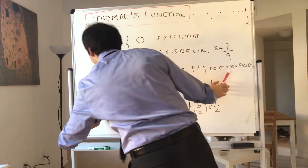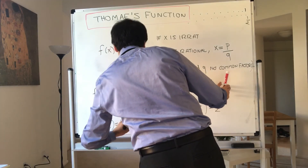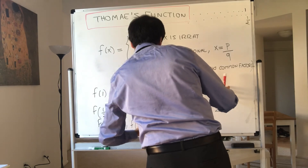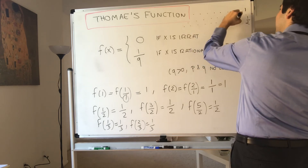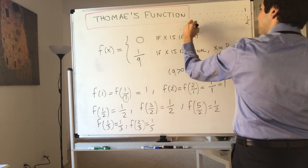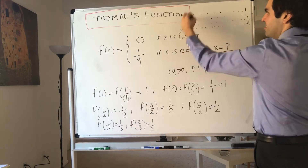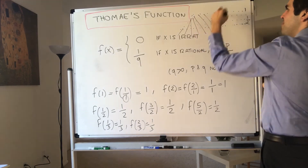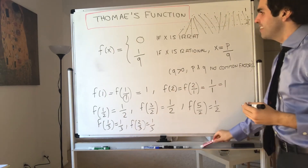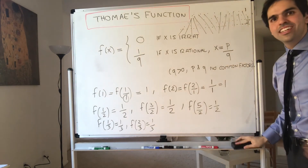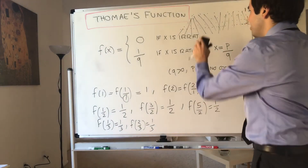Similarly, you see f of 1 third is 1 third, and f of 2 thirds is also 1 third. So basically it becomes this weird thing — sometimes that's called the rain droplet function, because it kind of looks like a rain drop. There's a better picture on Wikipedia; I highly recommend you look at it. I'm claiming this function is continuous at every irrational number and discontinuous at every rational number.